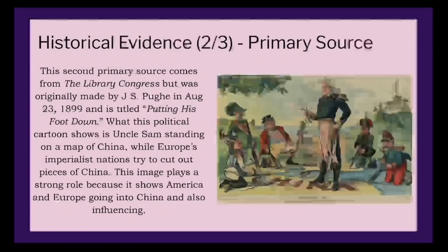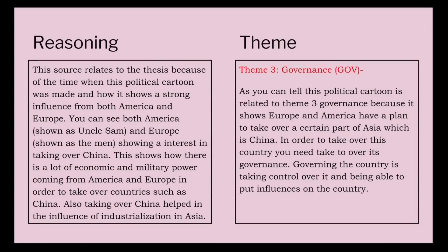This second primary source comes from the Library of Congress, originally made by J.S. Pughe on August 23, 1899. It is titled 'Putting His Foot Down.' This political cartoon shows Uncle Sam standing on a map of China while Europe's imperialist nations try to cut out pieces of China. The image plays a strong role because it shows America and Europe going into China and influencing it. This source relates to the thesis because it shows imperialist nations and America — represented by Uncle Sam — showing strong interest in taking over countries such as China, demonstrating economic and military power used to take over these nations and bring industrialization to Asia.